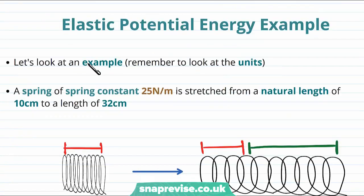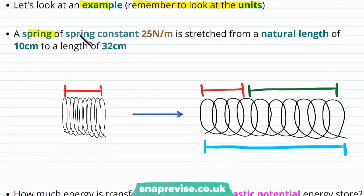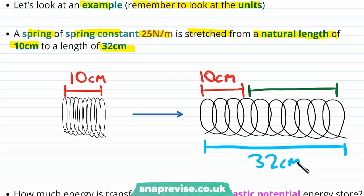So let's take a look at an example, and we're going to need to remember to look at the units. Let's imagine a spring of spring constant 25 newtons per metre is stretched from its natural length of 10 centimetres to a length of 32 centimetres. Let's quickly draw this information on a diagram so the natural length is 10 centimetres and it is stretched to a length of 32 centimetres. Notice we didn't say that the extension was 32 centimetres. In fact we can see from the diagram that the extension is 22 centimetres.